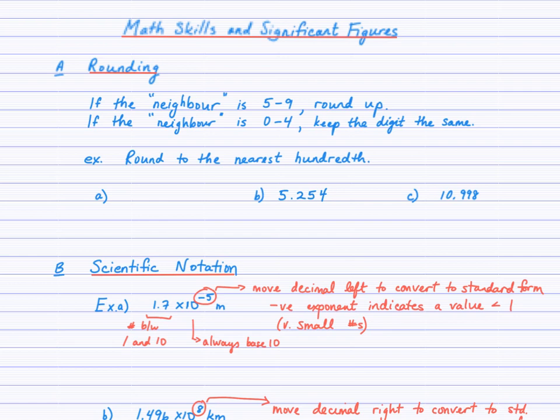Having a look at these three examples, we round to the nearest hundredth. Looking at 4.2163, we'll need to chop it after the 1, so looking at the 6 as our neighbor — because it falls in the 5 to 9 range — we will round the 1 up. And so we round to 4.22; that 1 becomes a 2.